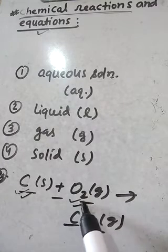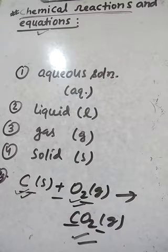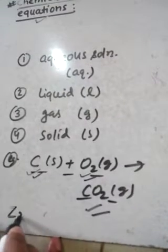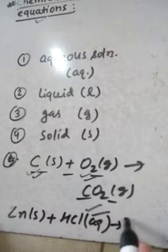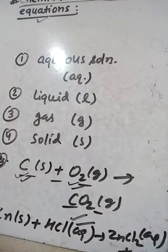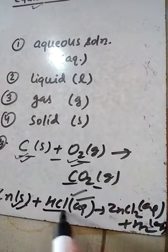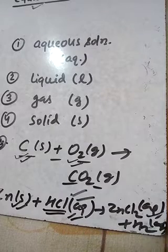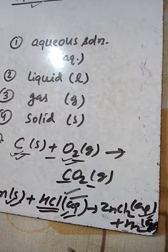Another example: when zinc is added to HCl, zinc chloride and hydrogen gas are formed. Zinc is in the solid state Zn(s), HCl is in aqueous form HCl(aq), zinc chloride ZnCl2 is also in aqueous form (aq), and hydrogen H2 is in gaseous form (g).